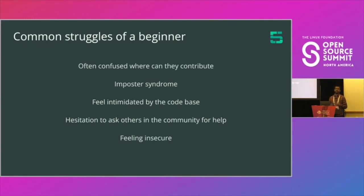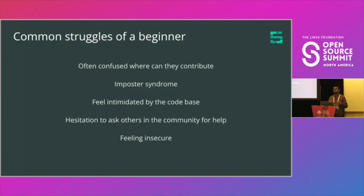They might get imposter syndrome from seeing a lot of other active contributors. And sometimes they might get confused about where they should actually contribute, because they don't have the appropriate knowledge about the ecosystem — especially if you're looking at a large ecosystem like the cloud native CNCF ecosystem.